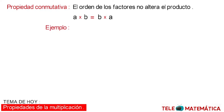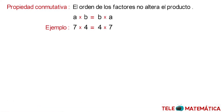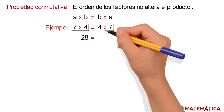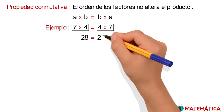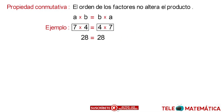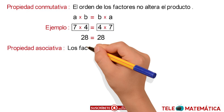Let's see an example: 7 multiplied by 4 is equal to 4 multiplied by 7. Solving the multiplication of the left member, we would have 28, and solving the multiplication of the right member, we would also have 28. So the property is fulfilled.